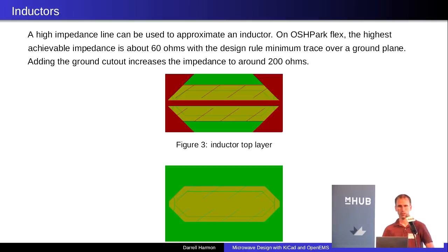Inductors. Again, in a stepped impedance low pass, normally you use a very thin line for your inductor. Well, in this case, on the thin Oshpark flex, the design rule minimum trace is about 60 ohms, which is no good. We want a few hundred ohms. We cut the ground out underneath it. As you can see here and here, that brings the impedance up to about 200 ohms. Just the fact that it increased the inductance per unit length and it decreased the capacitance per unit length.